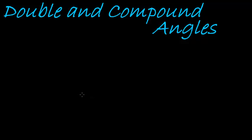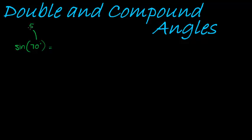Hi and welcome to this lesson on the exciting topic of double and compound angles. We're working in trigonometry, and what it basically comes down to is: can I write an angle as the sum of two other angles? For example, let's say I have sine of 70 degrees — is there a way of expressing this as 50 degrees and 20 degrees?